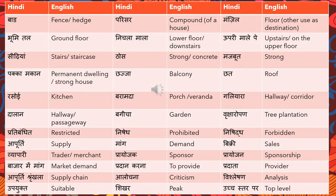The first word is 'bar' which means fence or a hedge. In your homes there will be a fence around the house, so 'bar' is what a fence is called in Hindi — fence or a hedge, 'parisar' meaning compound of a house, or campus. 'Manzil' is another word for destination, or in the context of a house or construction, 'manzil' would mean a floor.